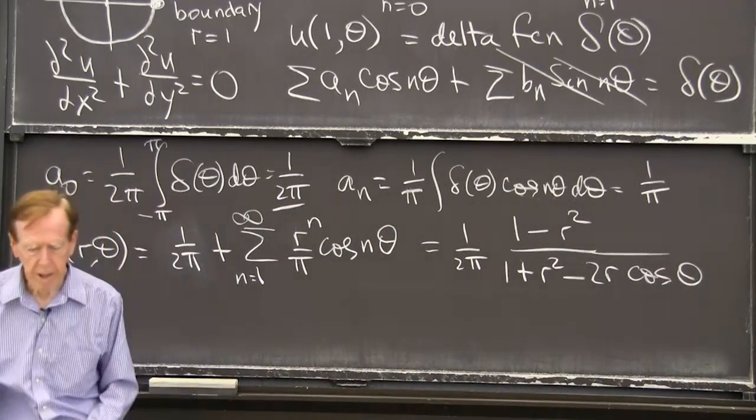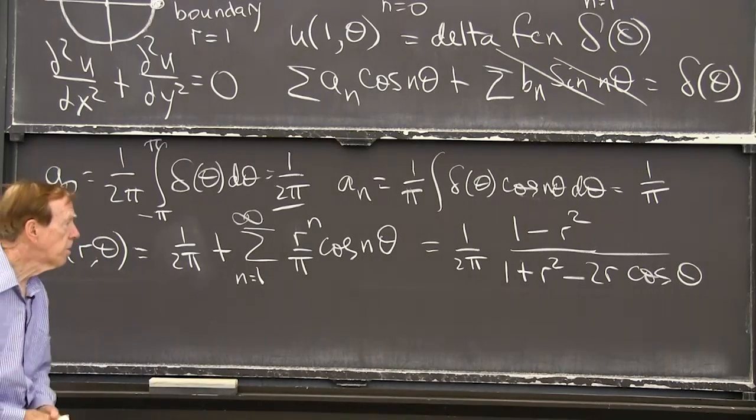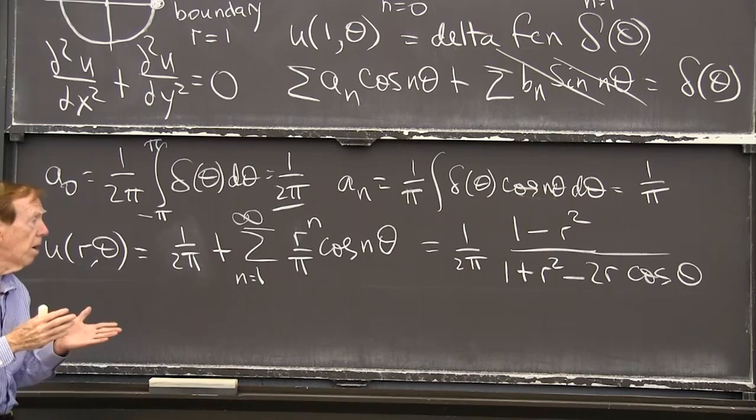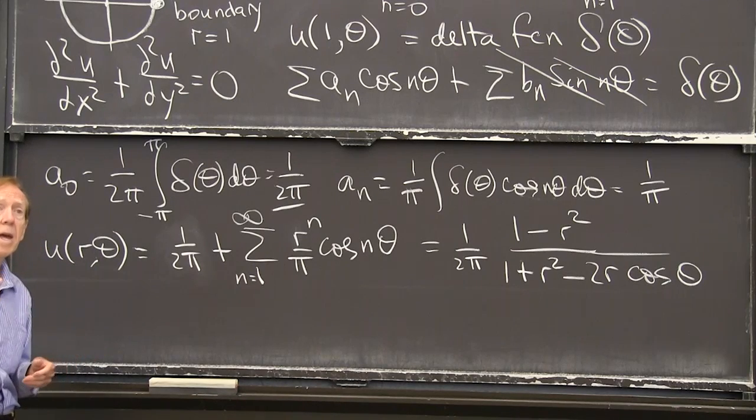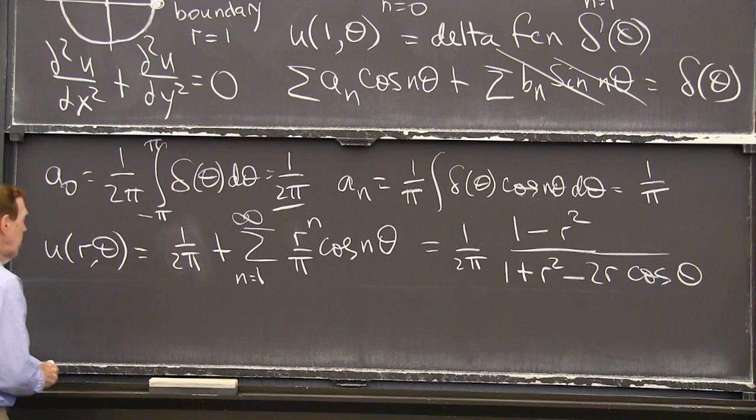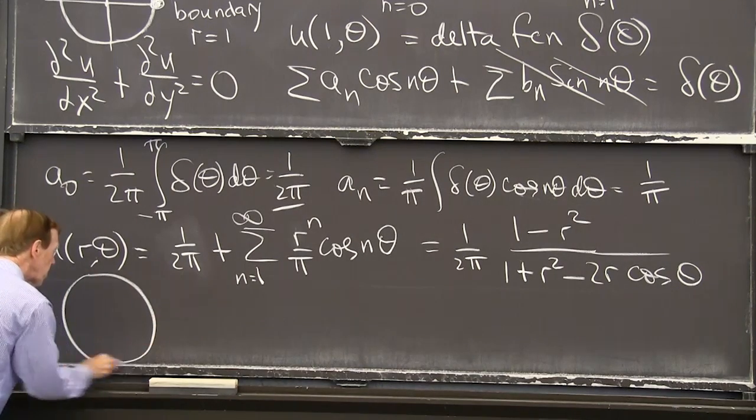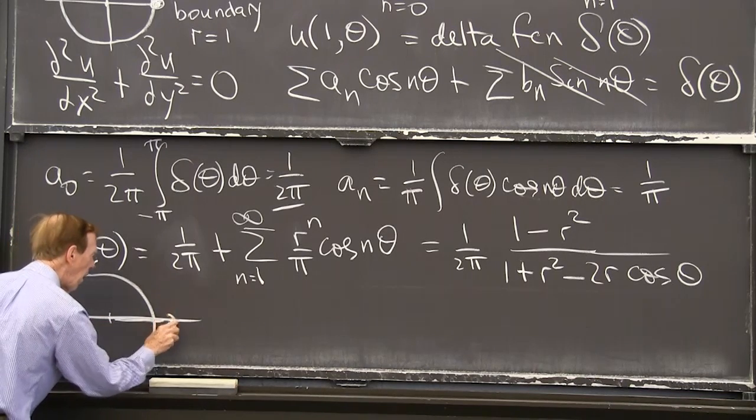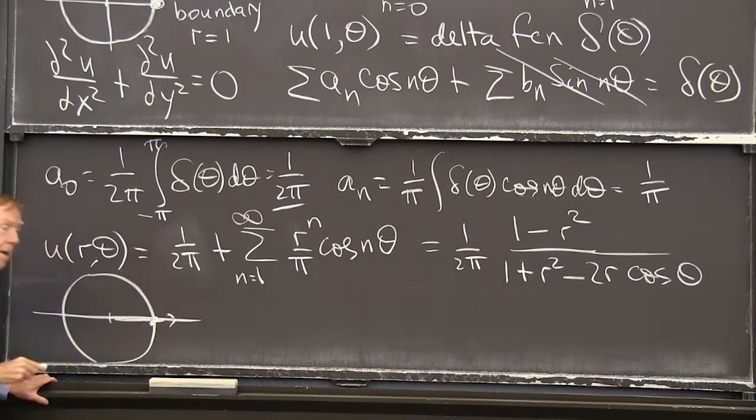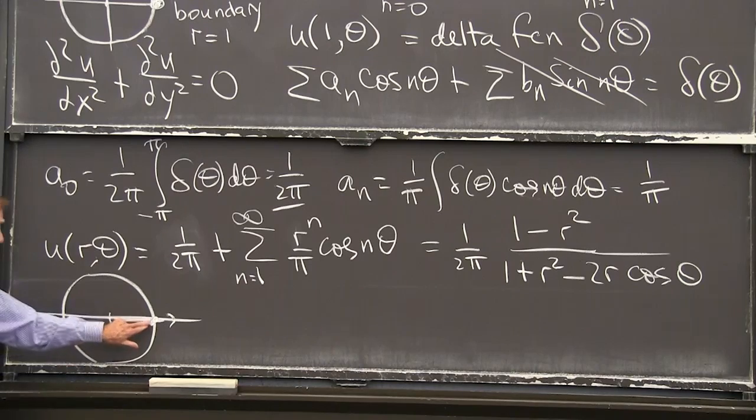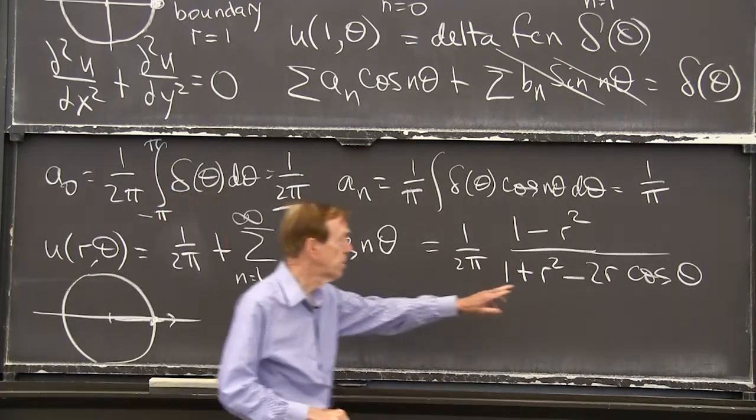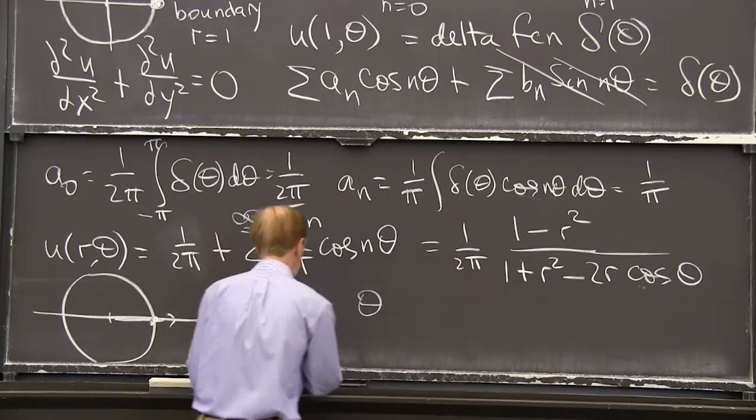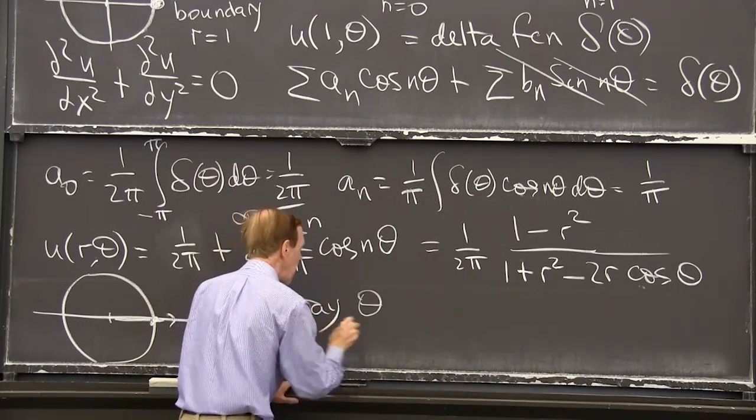So you can add it up. And I think there's a 1 over 2π still there. And I think it's 1 minus r squared over 1 plus r squared minus 2r cos theta. Let me just be sure I got that right. Yep, it looks good. And we could check if it's good. As r, let's take theta equals 0. So if we take theta equals 0, let me draw that circle again. Theta equals 0, we're coming out on that ray. And we're expecting to see infinity when we get there. At r equal 1. So at theta equals 0.